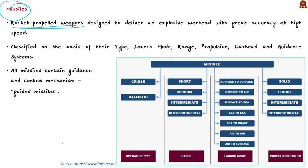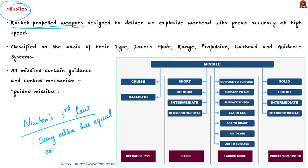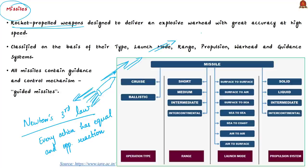Missiles are rocket-propelled weapons. Rocket propulsion works on the principle of Newton's third law of motion — to every action there is an equal and opposite reaction. Every forward acceleration is a result of a reactive force acting in the opposing direction. In a jet-propelled plane or rocket, a mass of gas is emitted rearward at high speed, and the forward motion is the reaction to this. Rockets are self-propelled, meaning the fuel and oxidant required for propulsion are within the engine itself.